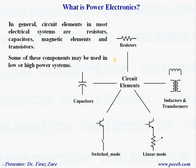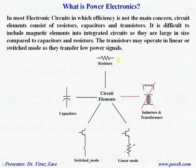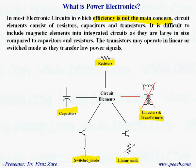In general, circuit elements in most electrical systems are resistors, capacitors, magnetic elements — either inductors or transformers — and transistors operating in switch mode or linear mode. In most electronic circuits where efficiency is not the main concern, circuit elements consist of resistors, capacitors, and transistors operating in switch or linear mode. Normally we don't like to have magnetic elements like inductors or transformers because they are large in size and difficult to integrate.